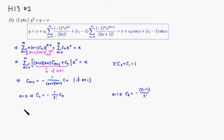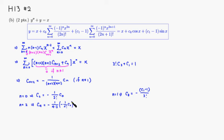Other than n equals 1, it follows the rule. For n equals 2: c4 equals negative 1 over 4 times 3 times c2. Substituting c2, we get negative 1 squared times c0 over 4 times 3 times 2 factorial, which equals c0 over 4 factorial with a factor of negative 1 squared.